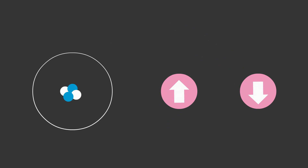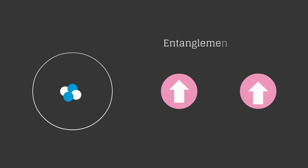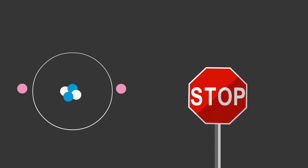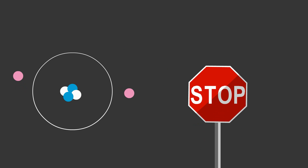Suppose these two electrons are like a prism. One electron's spin direction is parallel to one electron's spin direction. Now, one electron can be shared. This is the Pauli Exclusion Principle.